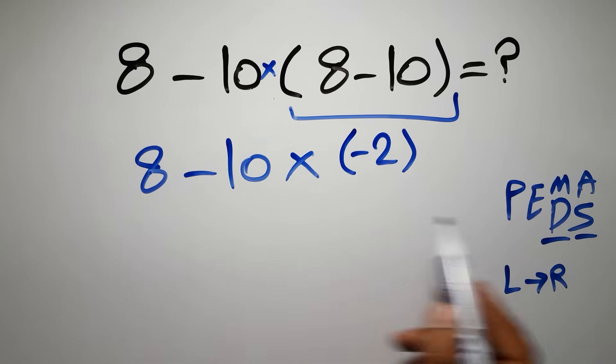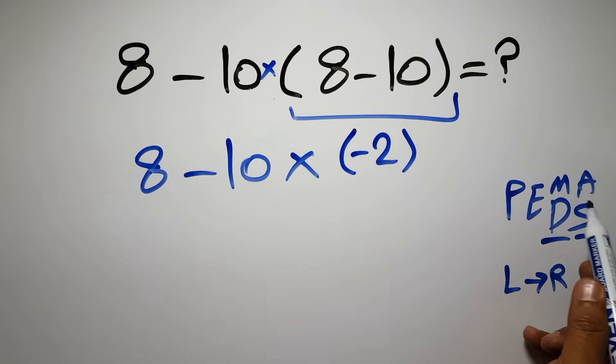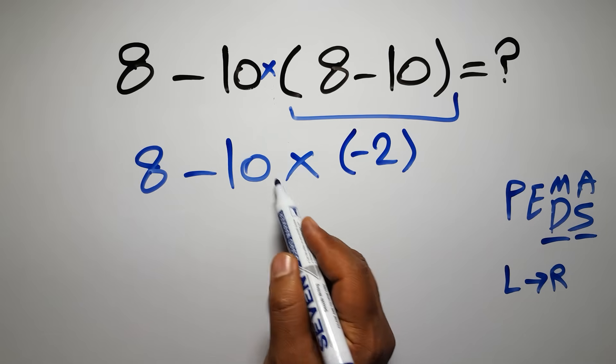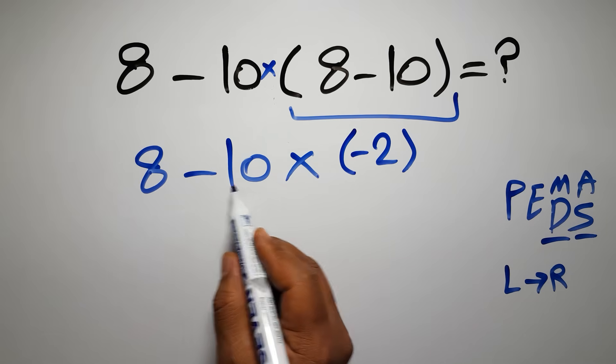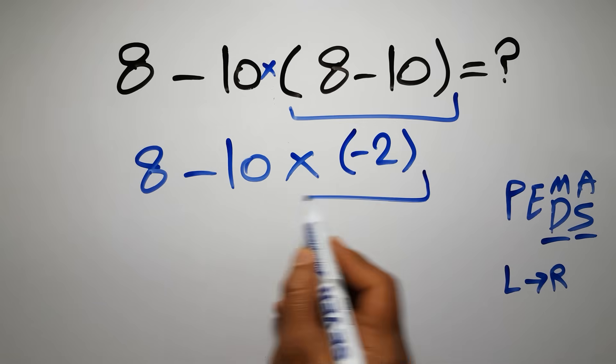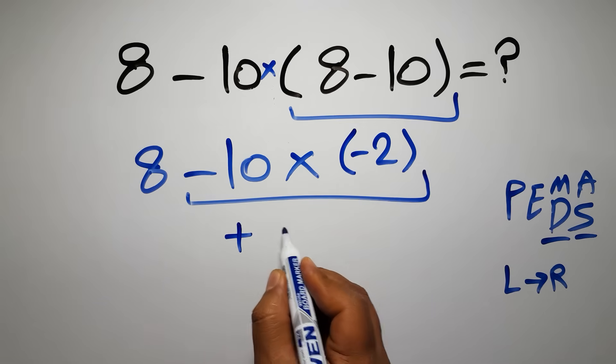because in PEMDAS multiplication comes before subtraction. So here first we have to do this multiplication: negative 10 times negative 2 gives us positive 20.